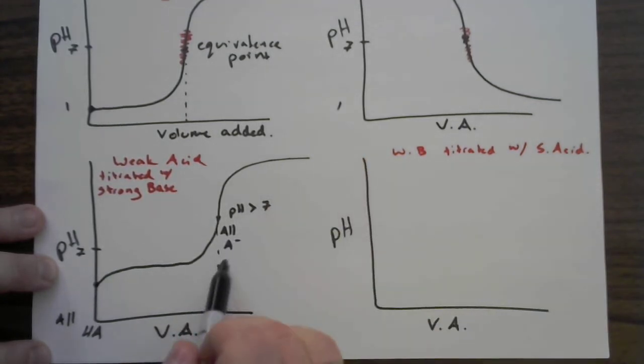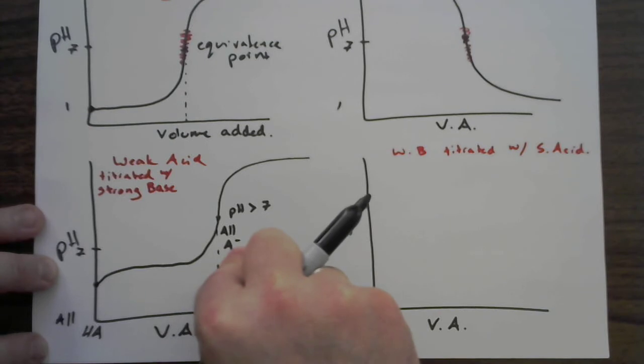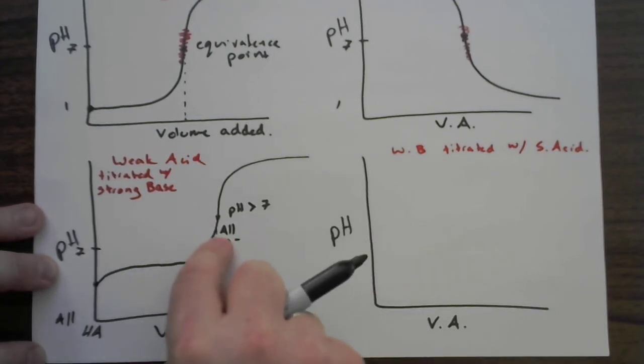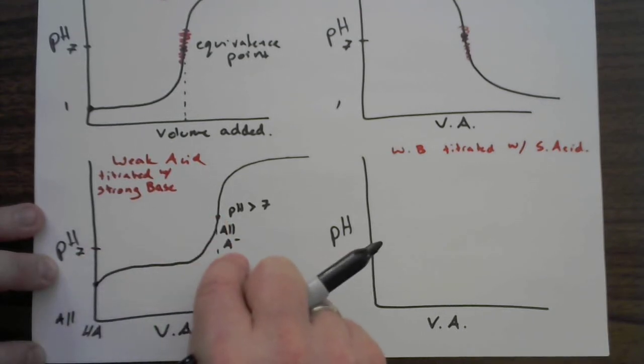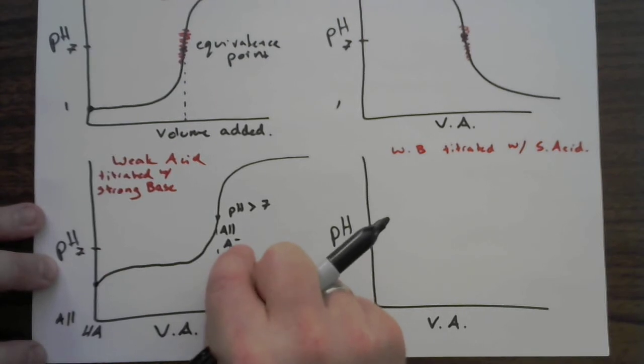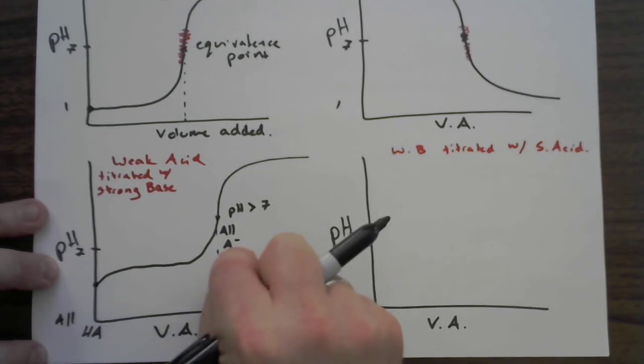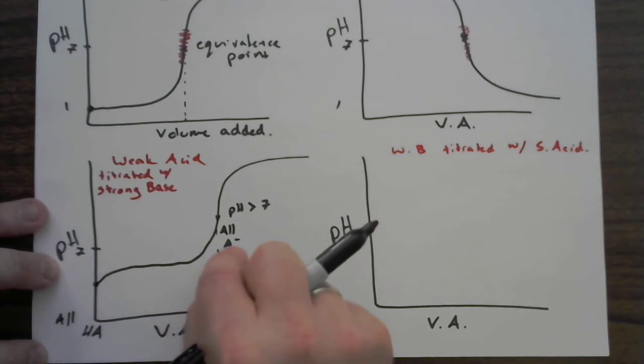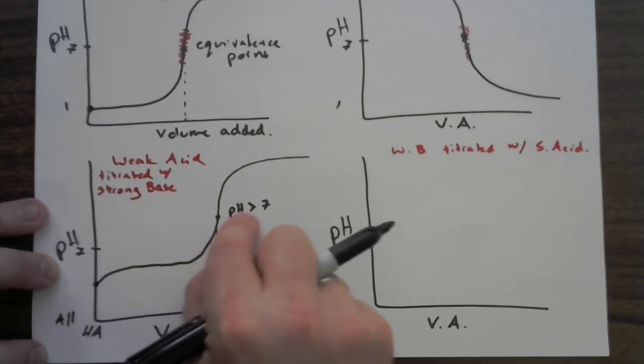As I add the OH minus, I get over here and I'm effectively all A minus by the time I get to the equivalence point over here. But the deal is, is that it is not a brilliant approximation to say that this all actually stays as A minus. This is a weak base and so it's going to actually raise the pH of the solution by just a little bit, because this thing is going to go find some fresh waters in solution and very occasionally it's going to take an H plus from them. It's going to go back to looking like this form, but in that process it's going to make a little bit of OH minus. So that's why the pH is above seven here.